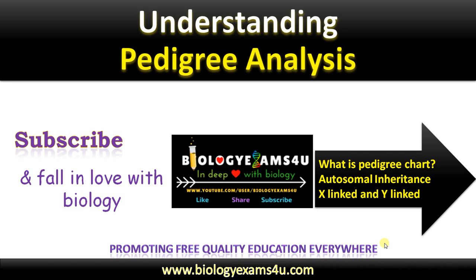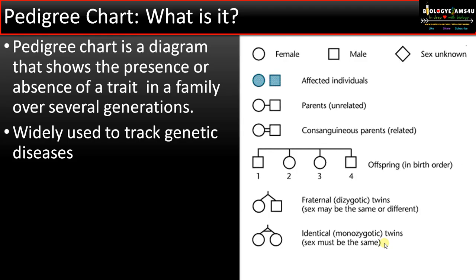Let's begin with why we need a pedigree chart. A pedigree chart is a diagrammatic representation that shows the presence or absence of a trait, a character, or a disorder in a family over several generations. Genetic counselors use this to track genetic diseases.